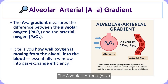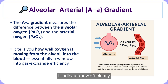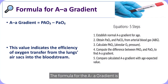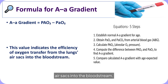The alveolar-arterial (AA) gradient measures the difference between alveolar oxygen (PAO2) and arterial oxygen (PaO2). It indicates how efficiently oxygen moves from the alveoli into the blood, providing insight into gas exchange efficiency. The AA gradient is calculated by subtracting the arterial oxygen pressure from the alveolar oxygen pressure, reflecting how efficiently oxygen moves from the air sacs into the bloodstream.